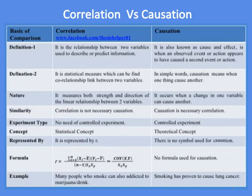Correlation is represented by R, while there is no symbol used for causation. The correlation coefficient R is equal to the covariance of X and Y divided by the standard deviation of X and the standard deviation of Y. There is no formula used for causation.